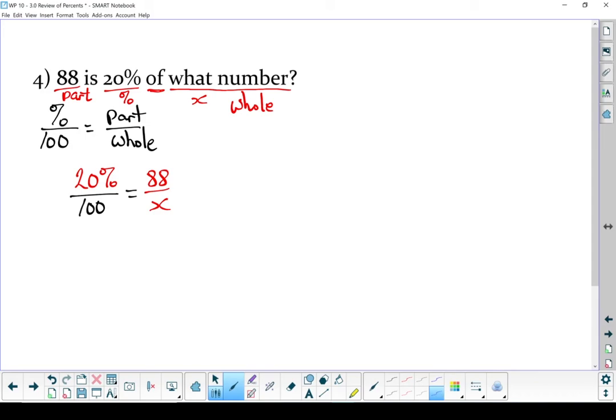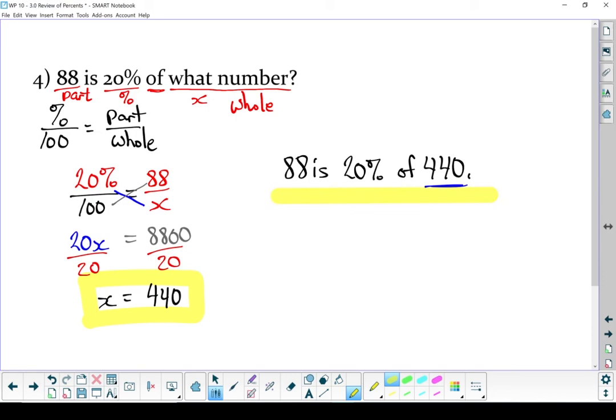And let's cross multiply. 20 times x equals 100 times 88. 8,800. Let's finish it off. Divide both sides by 20. x equals 440. That means 88 is 20% of 440. And that's a quick review of percents.